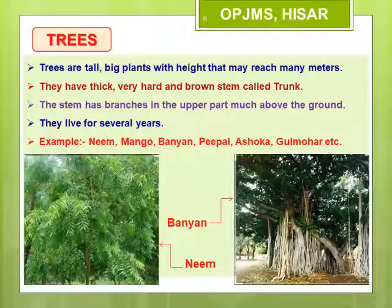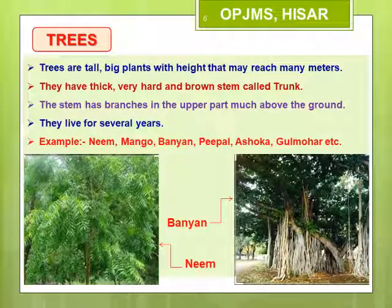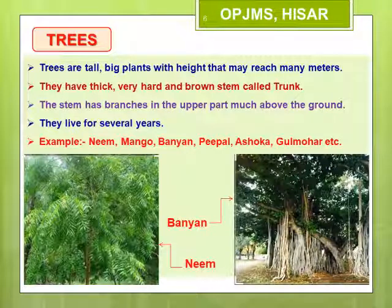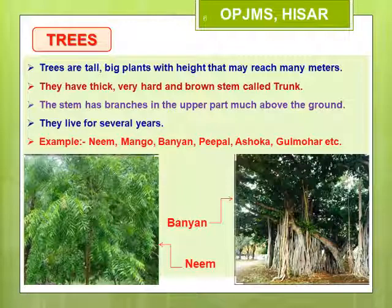Trees are tall, big plants with height that may reach many meters. They have hard, thick, and brown main stem commonly known as a trunk. Their branches arise from nearly the top of the stem and spread much above the ground. Their lifespan is of several years. The most common examples are neem, mango, banyan, peepal, gulmohar, etc.